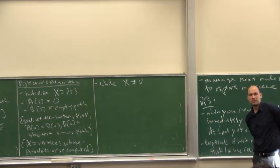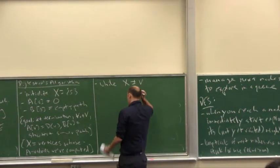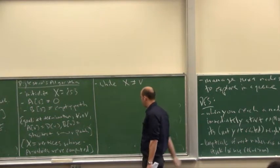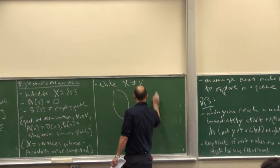So the question is, how do we cleverly pick the way to do that? Now this is pretty clever. So what we're going to think about is we're going to think about sort of the frontier between X and V minus X.